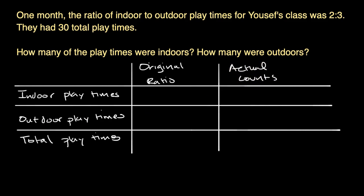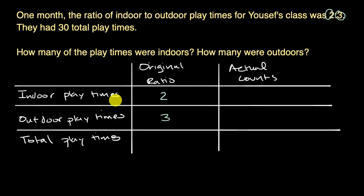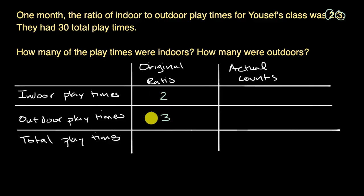What information do we know? We know that the ratio of indoor to outdoor is two to three. We can also think about what the ratio of either of these would be to total playtimes. For every two indoor playtimes, there are three outdoor playtimes, which means for every two indoor playtimes, there are five total playtimes. Or for every three outdoor playtimes, there are five total playtimes.